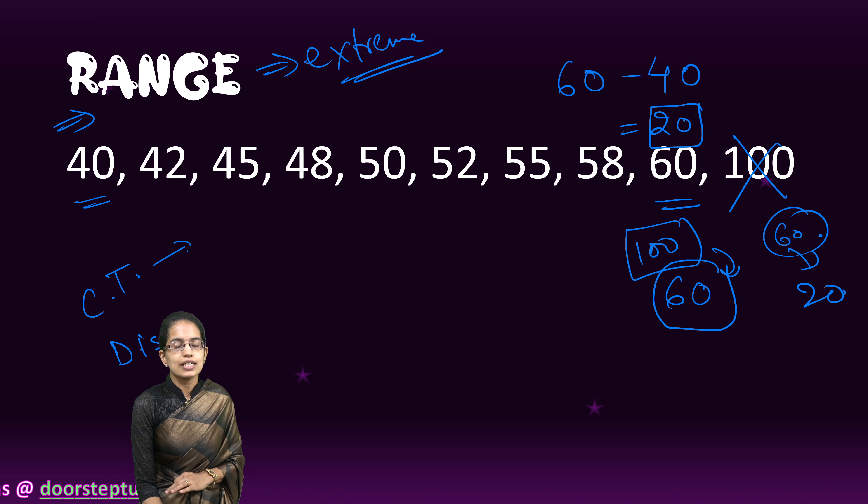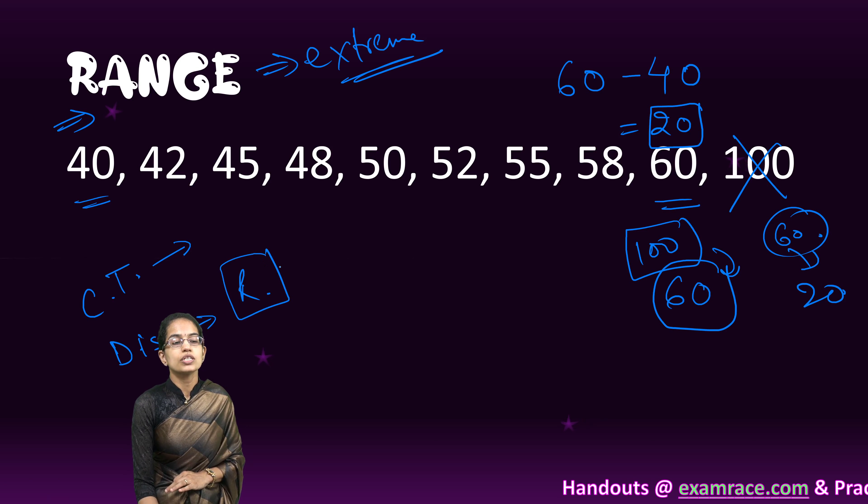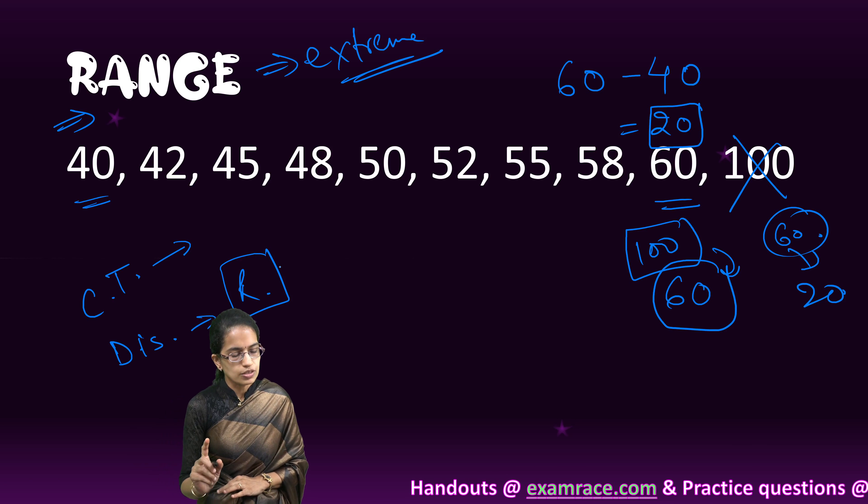Under central tendency, as we know, we have mean, mode, and median. Under dispersion, we have range, mean deviation, standard deviation, and range is one of the most fundamental among those.